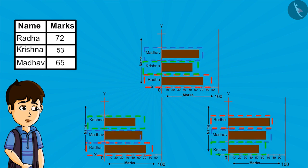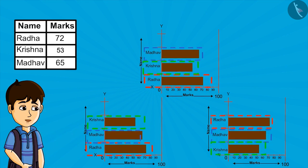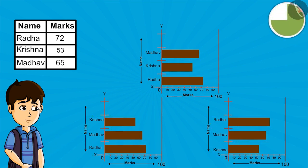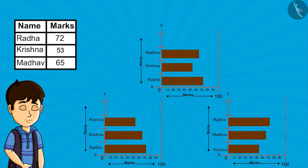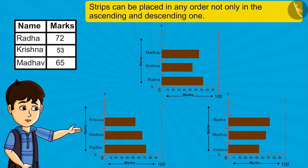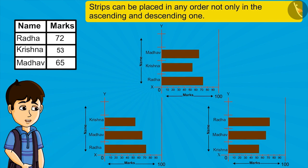Look at these three charts carefully. You can pause the video and closely look at the chart. You can rightly interpret data from these three charts. So we can say strips can be placed in any order, not only in the ascending and descending one.